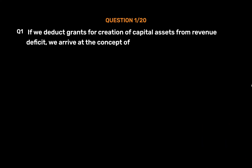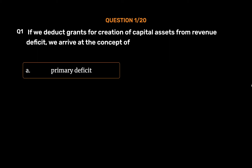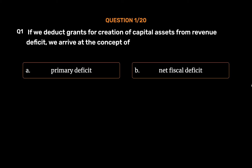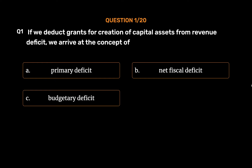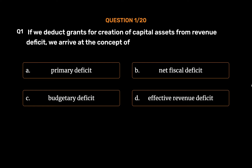If we deduct grants for creation of capital assets from revenue deficit, we arrive at the concept of: Option A, Primary Deficit; Option B, Net Fiscal Deficit; Option C, Budgetary Deficit; Option D, Effective Revenue Deficit. The correct answer is Option D, Effective Revenue Deficit.